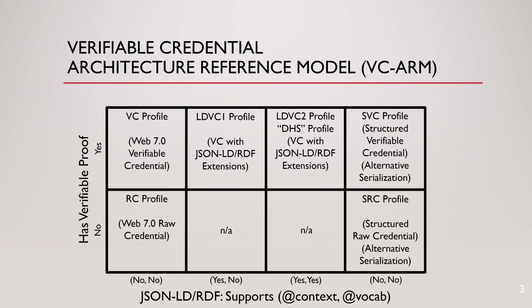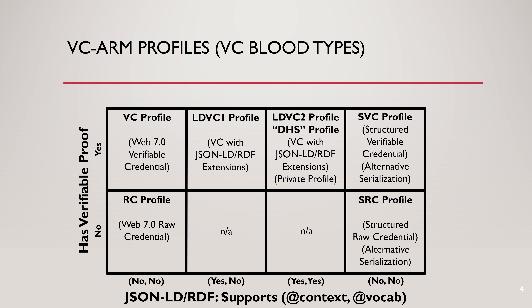I'm going to actually introduce this at the end, but here's a quick picture of what the verifiable credential architecture reference model looks like. It's two-dimensional: along the vertical axis it has a verifiable proof, and along the bottom is the level of JSON-LD RDF support. That horizontal axis also includes the idea of alternative serializations. The blood types shown in bold are: VC, RC, LDVC1, LDVC2, SVCs, and SRCs.